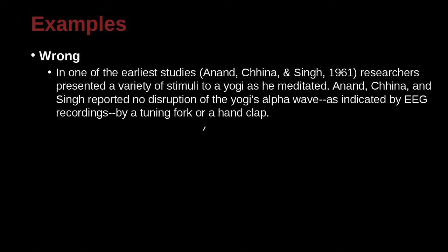Let's look at this example. In one of the earliest studies, Enad, Sheena, and Sine (1961) researchers presented a variety of stimuli to a yogi as he meditated. Enad, Sheena, and Sine reported no disruption of the yogi's alpha wave, as indicated by EEG recordings, by a tuning fork or a hand clap. That is a long citation — two sentences. You can see the ampersand is used there, not A-N-D.